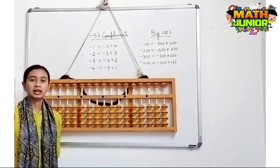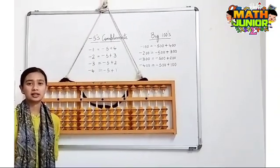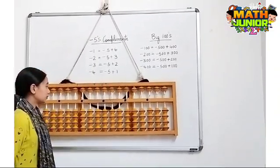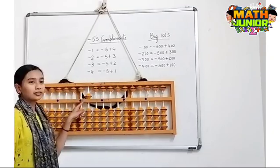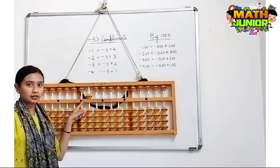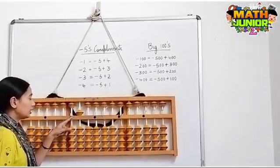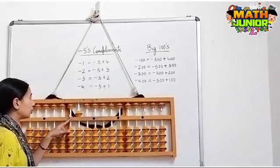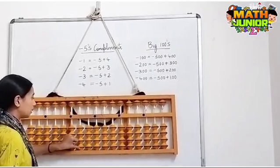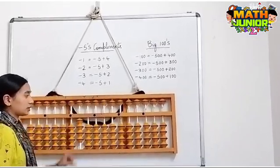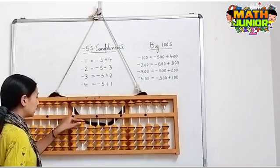Now let's learn minus 5's complement and its big 100's. In the 100's lot, I have 500 and I need to remove 100, so the formula for minus 100 is minus 500 plus 400.